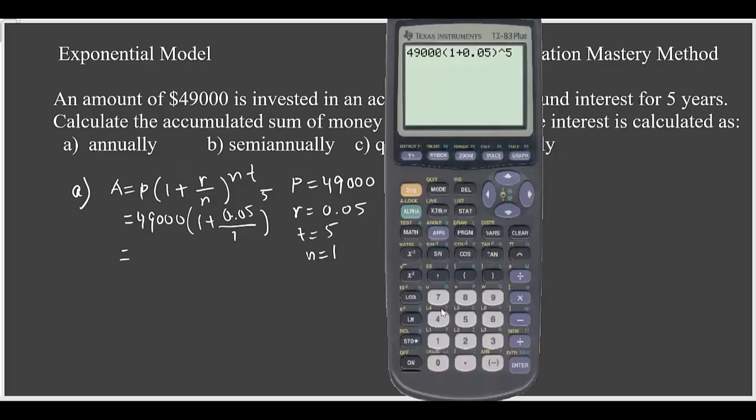When the interest is calculated annually, our n is 1 and the invested amount is $49,000, which is P. Rate is 5%, we can write as a decimal 0.05, and t is given as 5 years. When you plug all of this here and then use your calculator, hit enter, you get the answer and we'll write this answer.